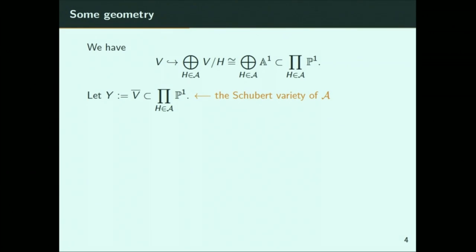That map has kernel 0, so I get an injection. Since I had hyperplanes, V mod H is just a one-dimensional affine space, and A1 embeds inside P1. So I can look at V inside a product of P1s, one for every hyperplane. I find some variety called Y — the Schubert variety of the arrangement — which I call that because it has some analogy to the Schubert varieties you see in flag varieties. It's just the closure of this vector space inside the product of P1s.